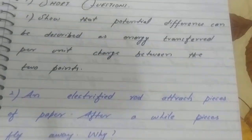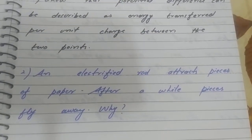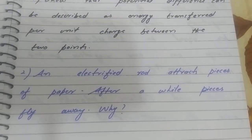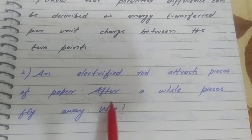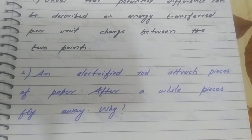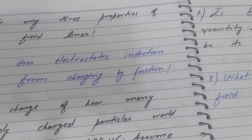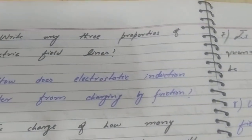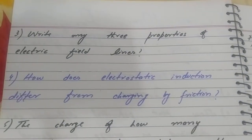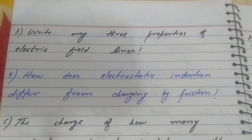Question two is: an electrified rod attracts pieces of paper, after a while the pieces fly away — why? Then question three is: write any three properties of electric field lines.